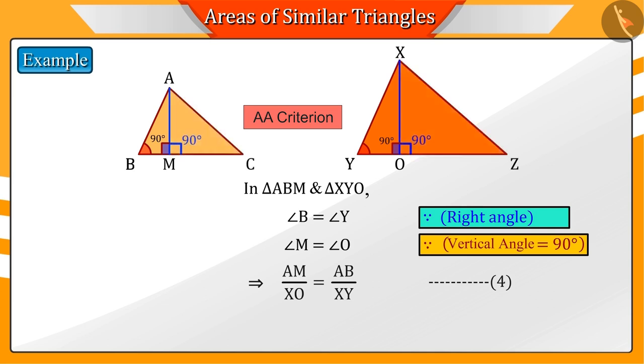We are given that triangle ABC and triangle XYZ are similar triangles. Therefore, the ratio of the corresponding sides will be the same.